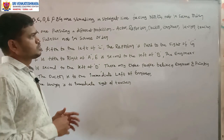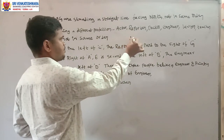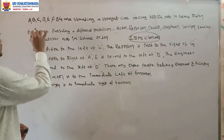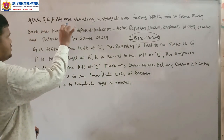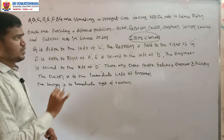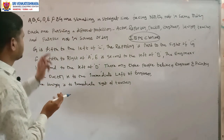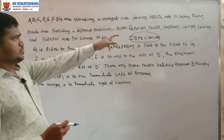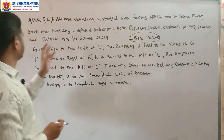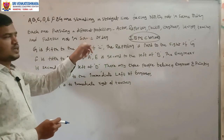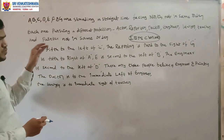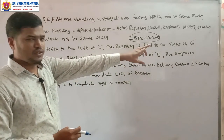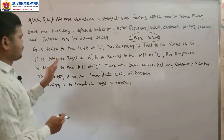Next, a somewhat complicated question from IBPS Clerk 2013. A, B, C, D, E, F, G, R are standing in a straight line facing north, not in the same order. Each one is pursuing a different profession — actor, reporter, doctor, engineer, lawyer, teacher, and painter — also not in the same order. Conditions given: G is the fifth to the left of C, the reporter is third to the right of G, and F is fifth to the right of A.